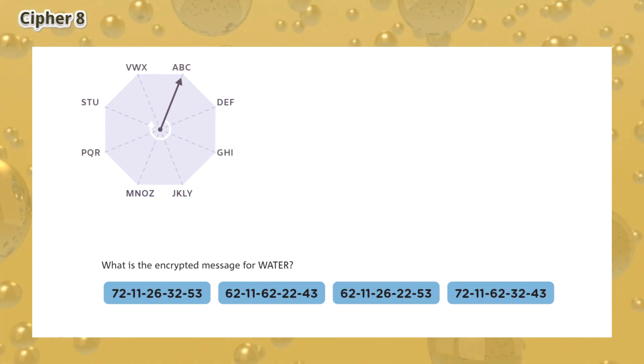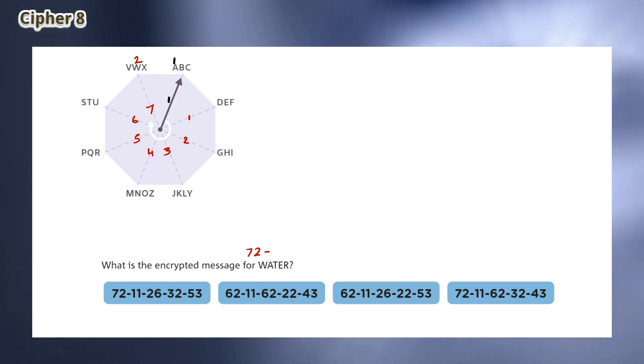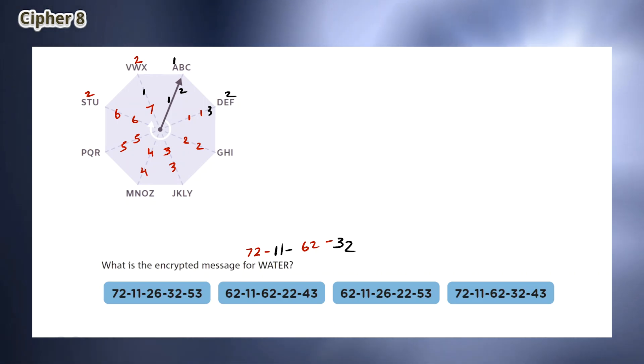To get the first letter, double E, the arrow must be rotated 7 points clockwise and the second letter must be chosen, which means that the first two digits are 7 and 2. To get the A, the arrow must be rotated once and the first letter must be chosen, which gives the second number 11. To get T, from this point on, the arrow must be rotated 6 times and the second letter must be chosen to give T, which gives the number 62. To get E, the arrow must be rotated 3 times and the second letter must be chosen to give E. To get R, the arrow must be rotated 4 times and the third letter must be chosen to give R. This means that the answer is the last option.